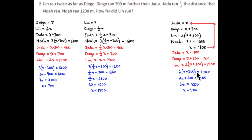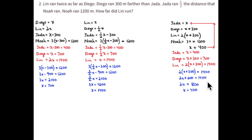Two times Diego's expression equals 1,400. Using the distributive property — or you could divide through by two — that gives x plus 300 equals 700, and x equals 400. Or using the distributive property: 2x plus 600 equals 1,400. Subtract 600, so 2x equals 800, and x equals 400 meters.